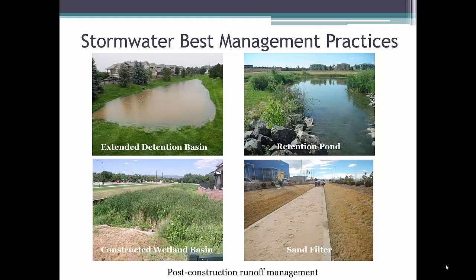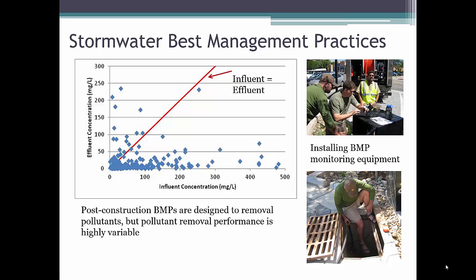Probably the most recognizable result of the MS-4 Permit Program is the implementation of post-construction BMPs. Post-construction BMPs, such as those shown in the pictures, are all over the urban environment. The city of Fort Collins, Colorado, for example, has over 1,500 post-construction BMPs throughout the city. These BMPs are designed to remove pollutants using different pollutant removal processes, such as settling and filtering, before stormwater is discharged downstream. Post-construction BMP performance is an active area of research at CSU and other universities throughout the U.S. We know that post-construction BMPs remove some pollutants better than others, and that different types of BMPs remove pollutants better than other types. Ultimately, we continue to look for BMP design improvements to increase pollutant removal effectiveness and reduce overall costs.